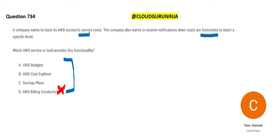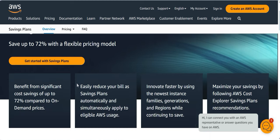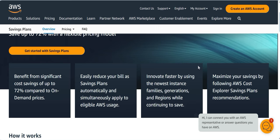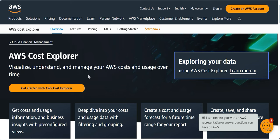Savings Plan is about saving money — for example, reserving compute instances to pay less, up to 72% savings. But the question isn't about saving money. Cost Explorer lets you visualize your spending in graphs and manage cost over time, but it doesn't do comparative studies against your forecast.